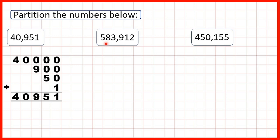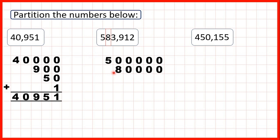Now let's partition 583,912. We have 5 in our hundred thousands place value column, so that's 500,000. We have 8 in our ten thousands, so that's 80,000 — 8 followed by 4 zeros, because we can see in our number that after the 8 we have 4 digits. We have 3 in our thousands place value, so that's 3,000. This 9 is in our hundreds, so that represents 900.